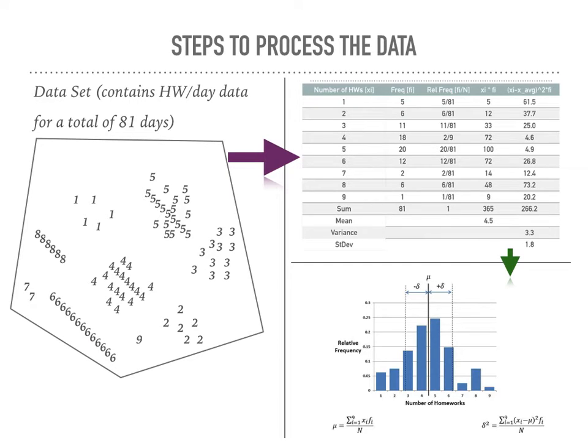Here are the steps to process the data. I have numbers in the data set. Here are all the experiments that I took out. Then, go to the purple arrow - the data set contains homework per day data for a total of 81 days. If we go over to the chart here, we can see this confusing array of stuff. I'll explain it to you.